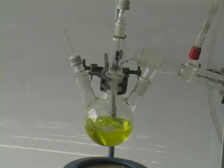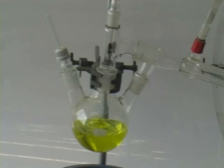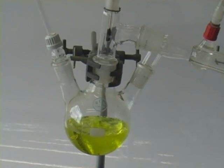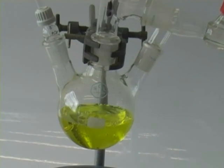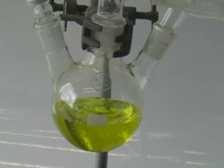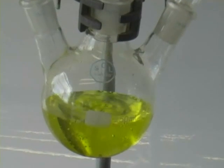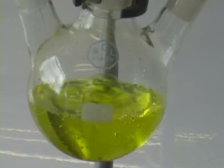We can then insert this into one neck of the flask so that the air bleed is dipping into the liquid. Here you can see the apparatus is currently under vacuum and with the air bleed in place, a small amount of air is being drawn into the flask. This bubbling prevents the solution from bumping, which is safer in this case than using an anti-bumping granule.